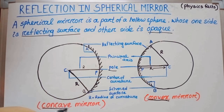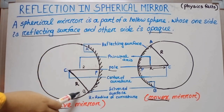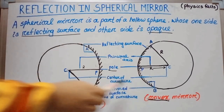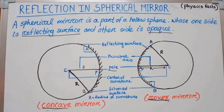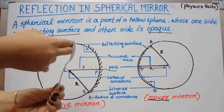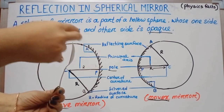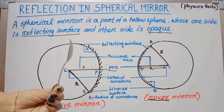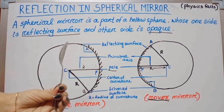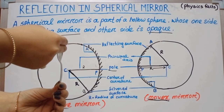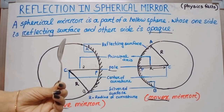That means, in case of a concave mirror, reflection takes place on the inner hollow surface, whereas in case of a convex mirror, reflection takes place on the outer bulb surface. Now let's take a spoon as an example. If the inner hollow surface is the reflecting surface, then this type of mirror is called a concave mirror.